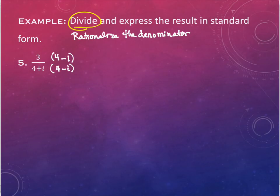I will still have i's on top — almost all the time when this happens. But I'll be eliminating the i from the bottom. So in one location I eliminate the i, sometimes it puts an i in a place that it wasn't there before. But the goal is to get the i's out of the denominator.